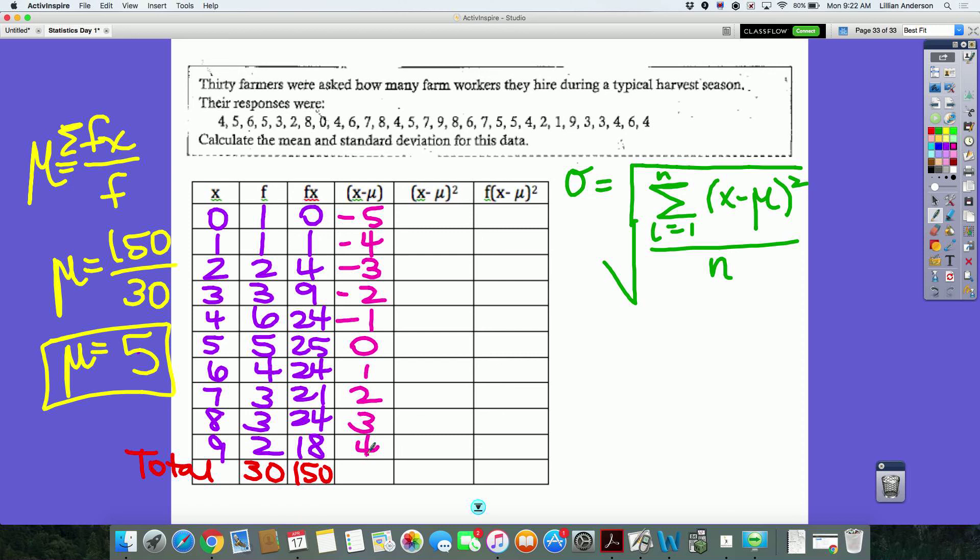Then you have to take every single one of those values, and then you have to square it. Square those values. So, we square the values. What do we get? 25, 16, 9, 4, 1, 0, 1, 4, 9, 16.